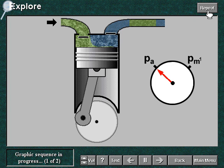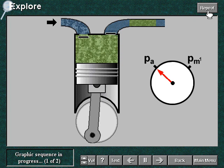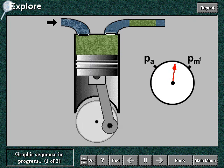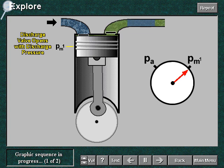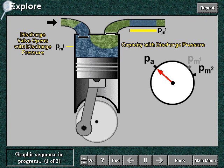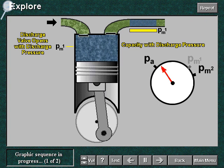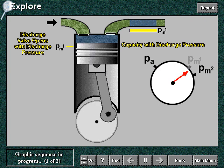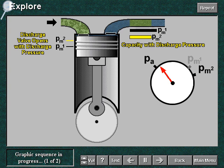Consider now a single stage compressor. If a higher delivery pressure happens, the compression ratio is increased and volumetric efficiency decreases. Less gas is delivered to the user and the compressor capacity is decreased.